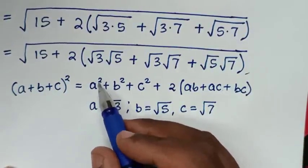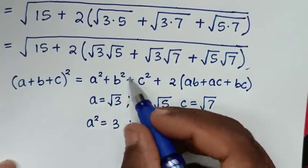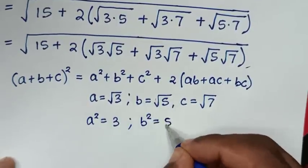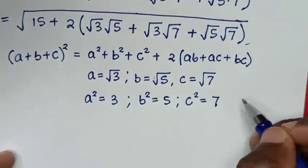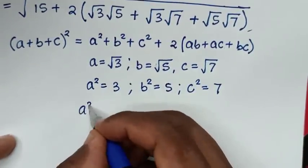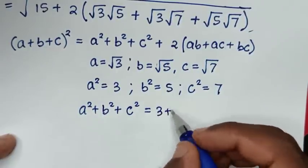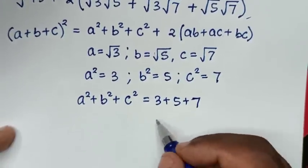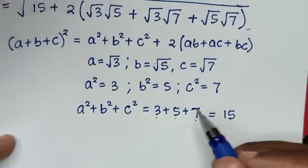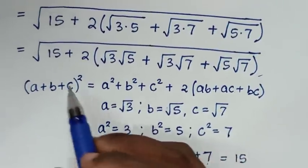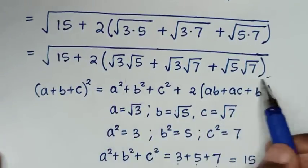From here: a² equals the square of square root of 3, which is 3. And b² equals the square of square root of 5, which is 5. And c² equals the square of square root of 7, which is 7. So a² plus b² plus c² equals 3 plus 5 plus 7, which equals 15 — and this 15 matches the 15 already in our expression.